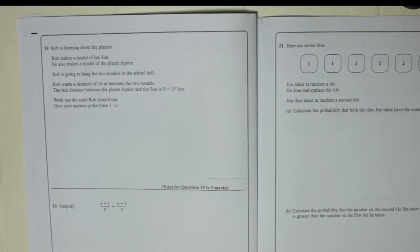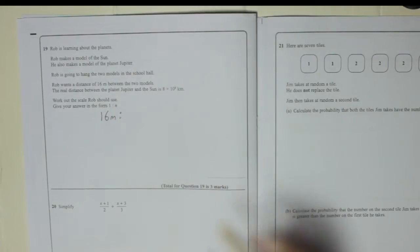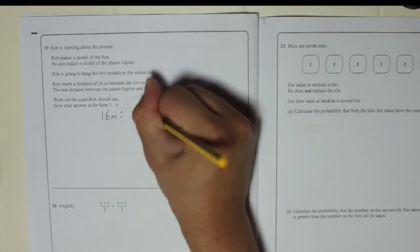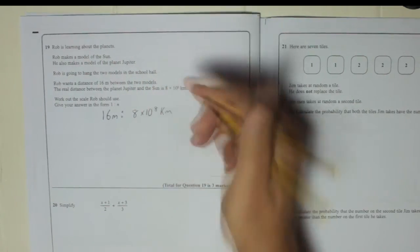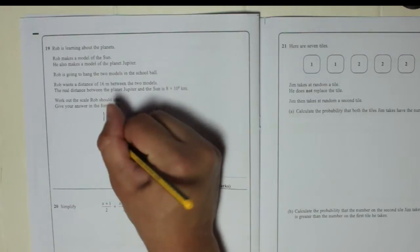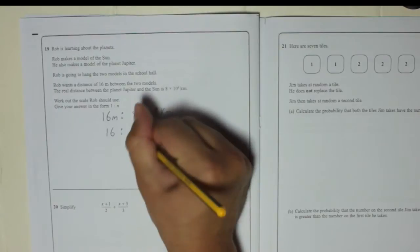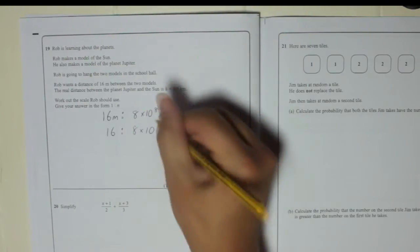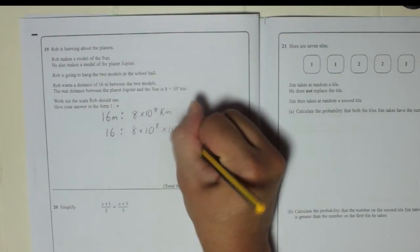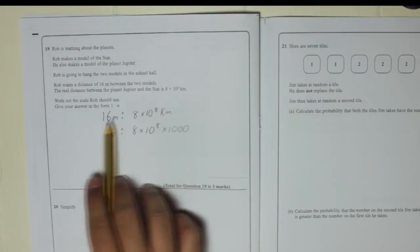So what do we know at the moment? We know he's going to have a distance of 16 metres and that is to 8 times 10 to the power of 8 kilometres. So make sure you remember there's different units. Metres here, kilometres there. So not taking units into account that would mean 16 to 8 times 10 to the power of 8 times by a thousand because that was in kilometres, that was in metres.